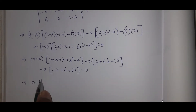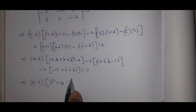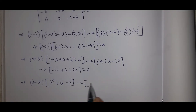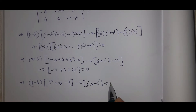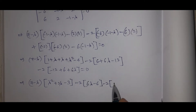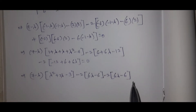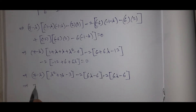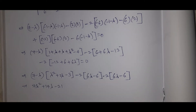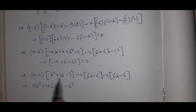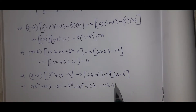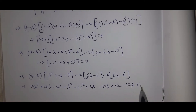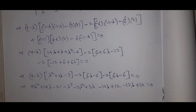Expanding further: (7−λ)(λ²+2λ−3) minus 2(6λ−6) minus 2(6λ−6) equals 0. Multiplying out: 7λ²+14λ−21 minus λ³−2λ²+3λ minus 12λ+12 minus 12λ+12 equals 0. Collecting terms: minus λ³ plus 5λ² minus 7λ plus 3 equals 0, which gives lambda cube minus 5 lambda square plus 7 lambda minus 3 equals 0.